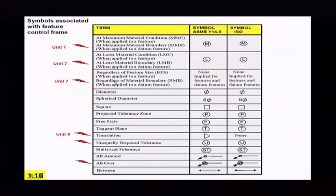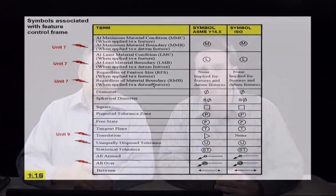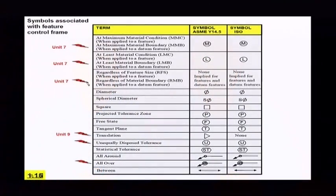When we work with features, regardless of feature size, we still apply to features. But when we're working with datum features, then we use regardless of material boundary. Now this material won't be covered in this particular unit. There's going to be some other DVDs you're going to look at, and those will be covered in unit 7. So when you get to that unit, you'll be able to see those.